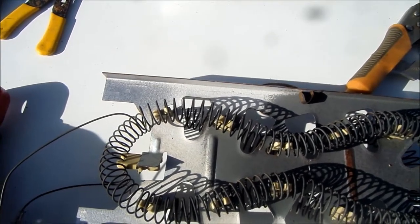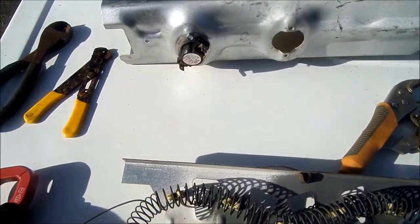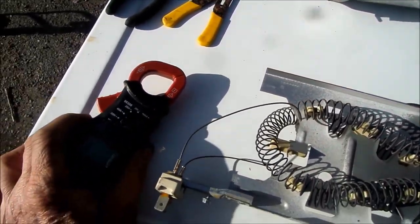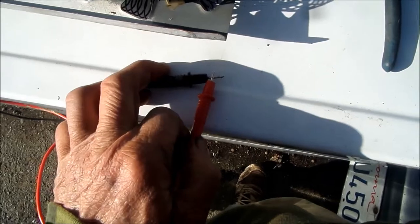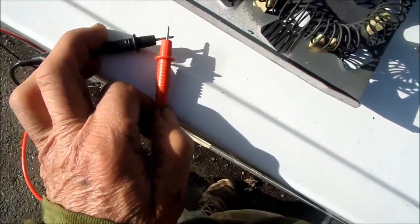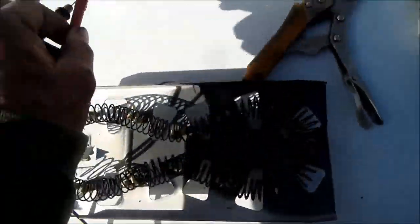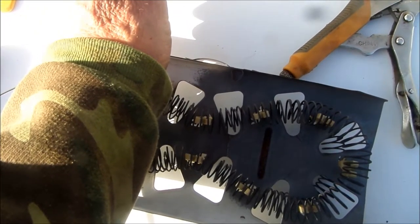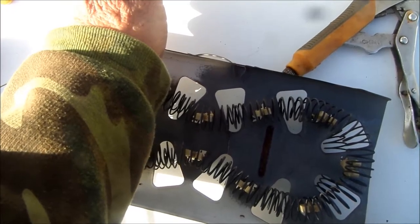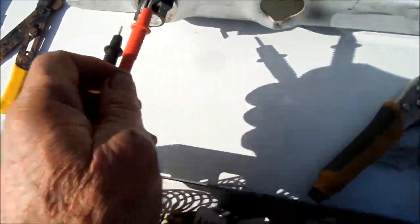The thermostats can be generally checked with a meter. So if you set your meter on ohms continuity, this one actually has a tone so that when we touch the probes together we have a tone. And we see here that this one is showing good continuity.